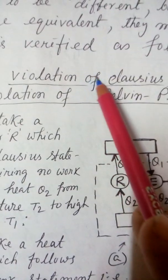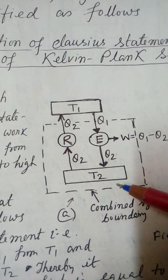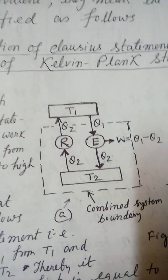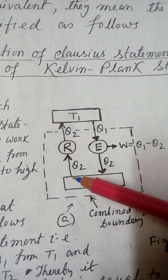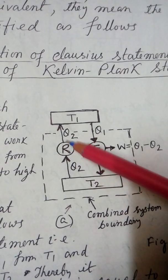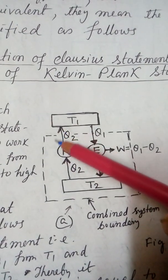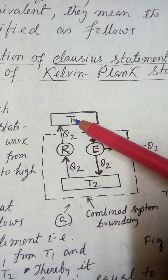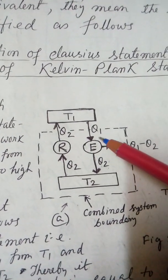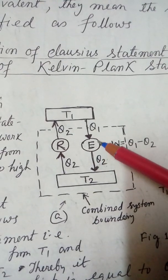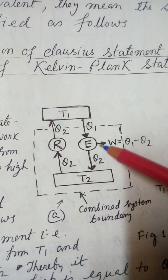Violation of the Clausius statement means: Q2 is taken out from T2 and the same amount Q2 is given to T1 — where T1 is greater than T2 — with no work input. Now, let us also have an engine operating on the Kelvin-Planck principle: Q1 is taken out from T1, Q2 is rejected at T2, and work W is produced, so Q1 minus Q2 equals W.